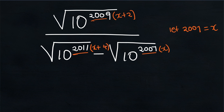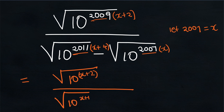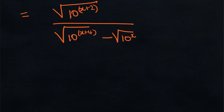Our next step is therefore to rewrite the expression. We have the square root of 10 to the power of (x + 2), in brackets, divided by the square root of 10 to the power of (x + 4), in brackets, minus the square root of 10 to the power of x. The next step will be to get rid of the square roots.